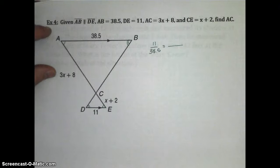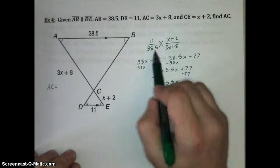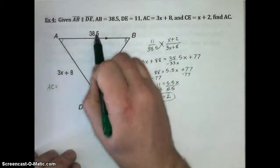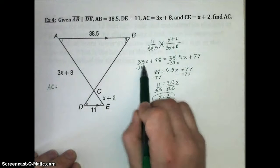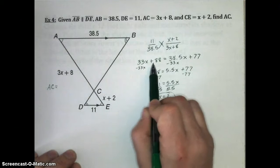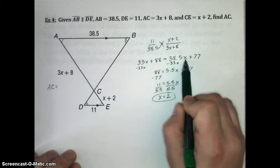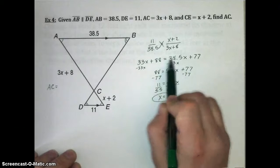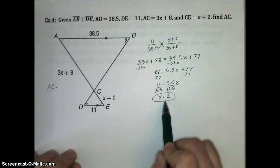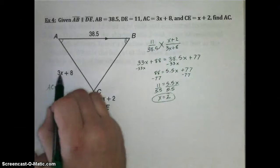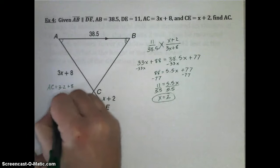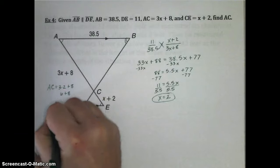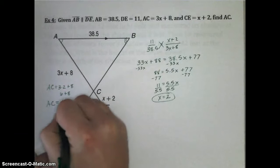Okay, if you need more time, pause the video. Otherwise, this is what we should have. All right, when we set up our proportion, 11 over 38.5 equals X plus 2 over 3X plus 8. So when we cross multiply, we get 33X plus 88 equals 38.5X plus 77. And you solve that for X, you should get X equals 2. That means we take 2 and we plug it in for X here. 3 times 2 plus 8, that's 6 plus 8. So AC equals 14.